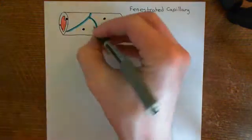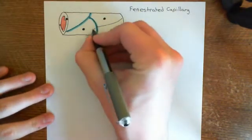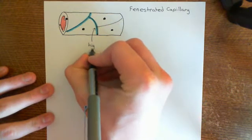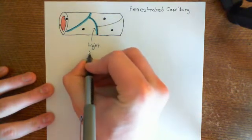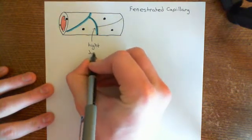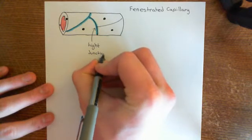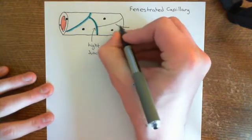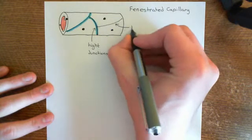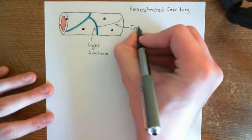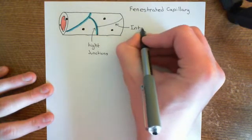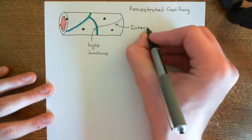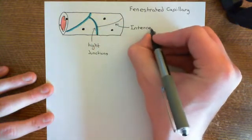So we've got tight junctions and intercellular clefts — in blue these are tight junctions, intercellular clefts not in blue. Where we don't have tight junctions between the boundaries of two cells, that's an intercellular cleft. And surrounding these endothelial cells you will have a basement membrane.